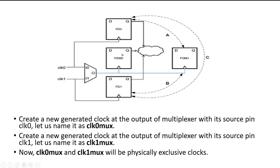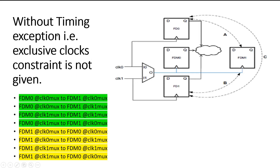Let me elaborate how declaring clock zero mux and clock one mux as physically exclusive clocks helps timing closure. First, consider the case that no timing exception is declared — that is, clocks are not declared as exclusive clocks. In that case, the PNR tool has to analyze all register-to-register paths. I have identified eight types of paths. Path 1: FDM0 working at clock zero mux to FDM1 working at clock zero mux. Path 2: FDM0 working at clock zero mux to FDM1 working at clock one mux. Path 3: FDM0 working at clock one mux to FDM1 working at clock one mux. Path 4: FDM0 working at clock one mux to FDM1 working at clock zero mux.